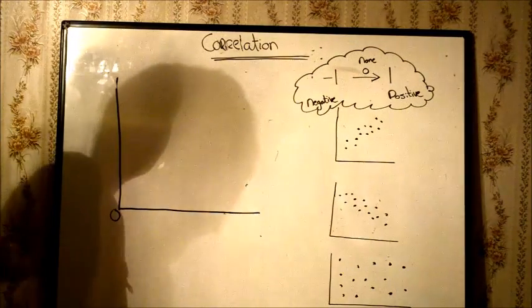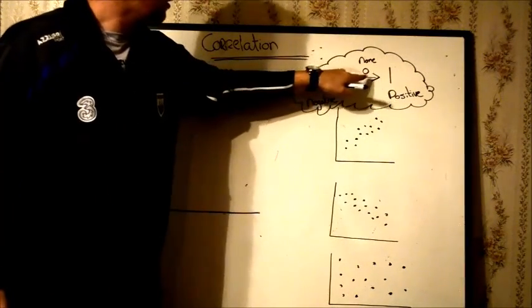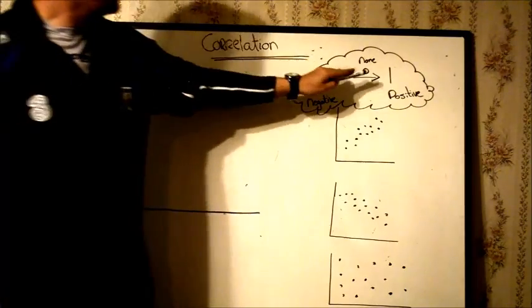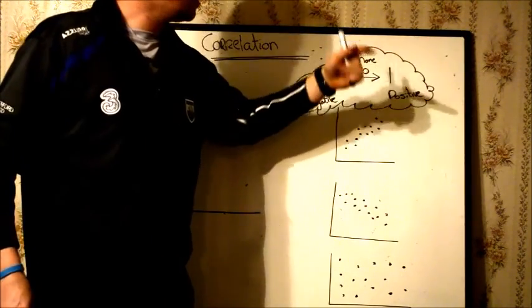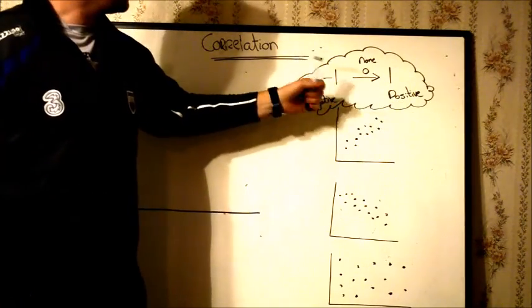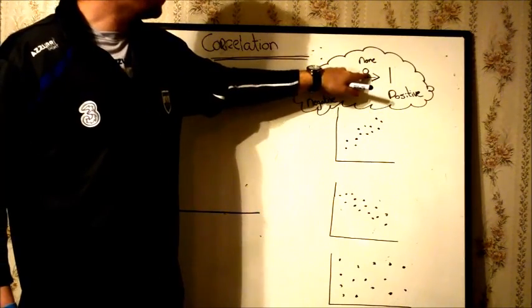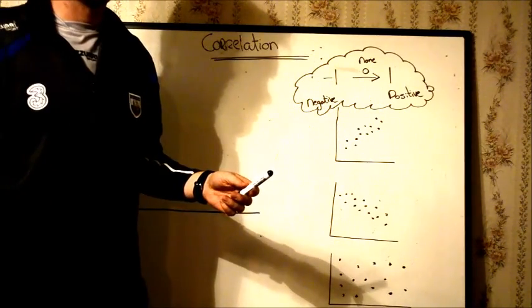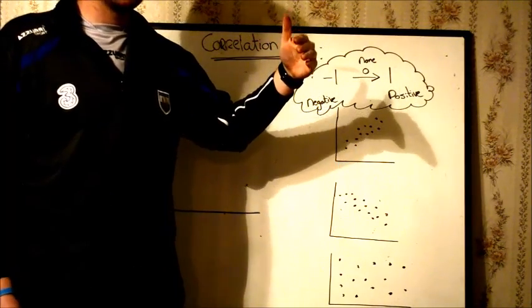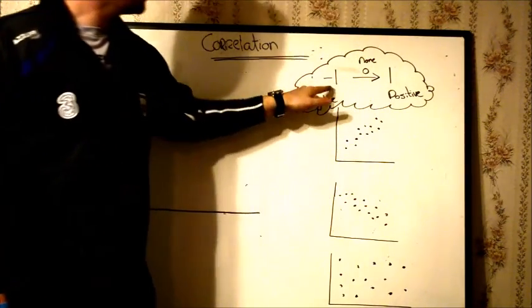Now we're going to look at correlation. Correlations run from 1 to 0 to minus 1. Anything from above 0 to 1 is called a positive correlation, and anything below 0 down to minus 1 is a negative correlation. And at 0 you can say there's no correlation. The closer your correlation is to 1, the more of a positive relationship there is. The closer it is to minus 1, the more of a negative correlation there is.